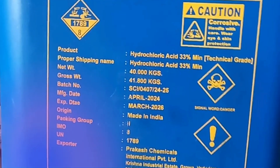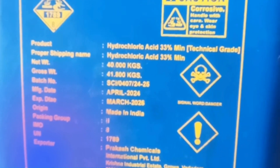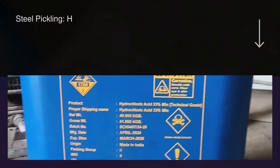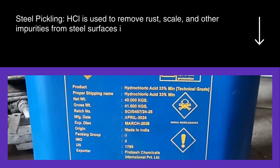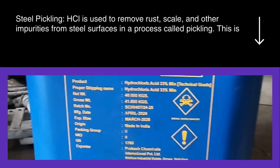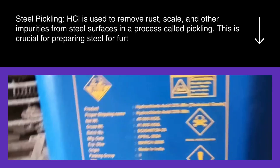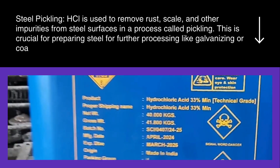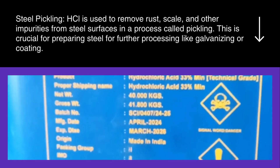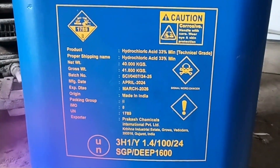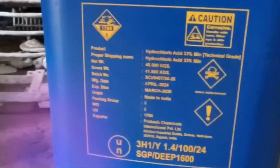Steel Pickling: HCl is used to remove rust, scale, and other impurities from steel surfaces in a process called pickling. This is crucial for preparing steel for further processing like galvanizing or coating.